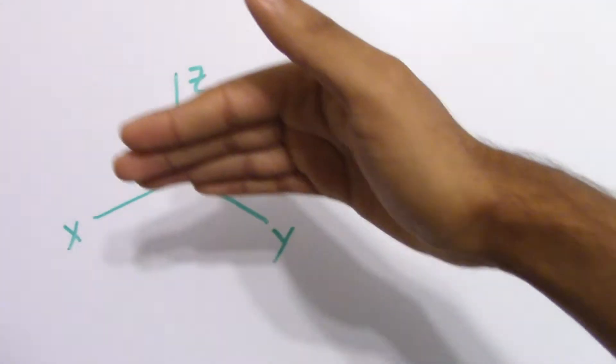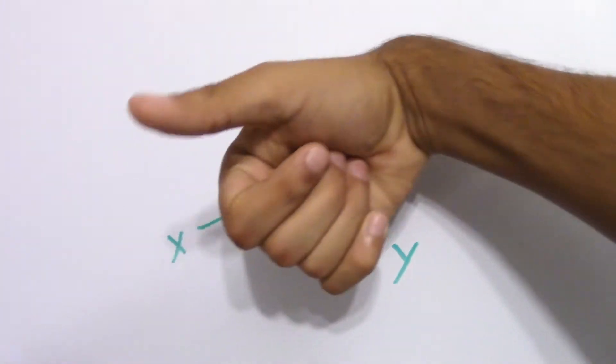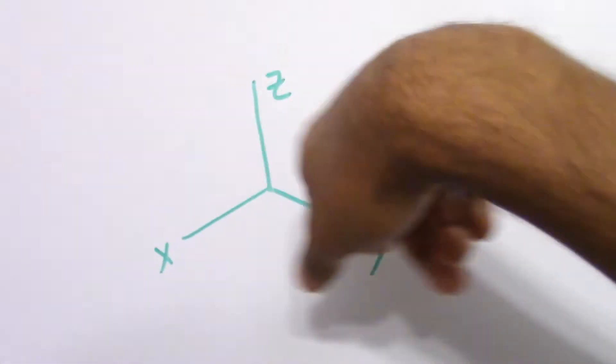Or the unit vector in the z-axis. So we take the x, which is i, and then we cross with j, which is the y.